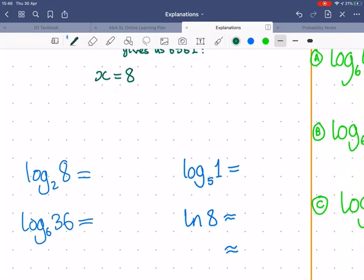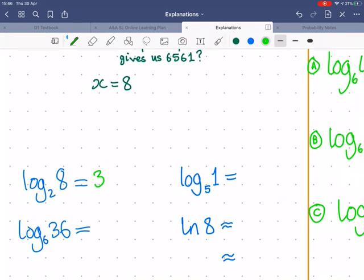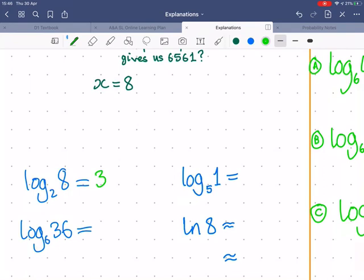So, let's calculate some of the logs. Log base 2 of 8. Well, what power of 2 gives us 8? 3 does. That was the one we did above. That would be how we solved this equation here. We would change it to x equals log base 2 of 8. And log base 2 of 8 equals 3.